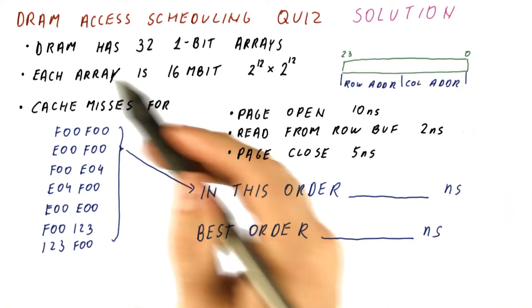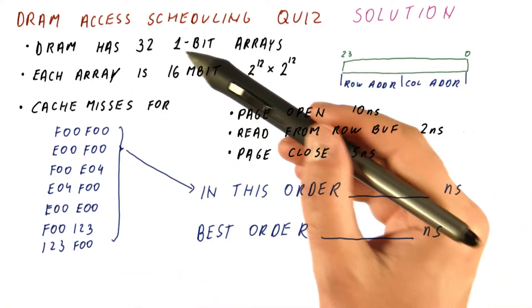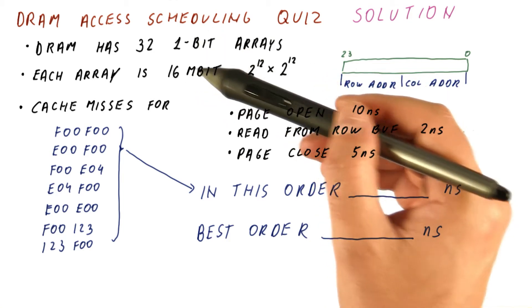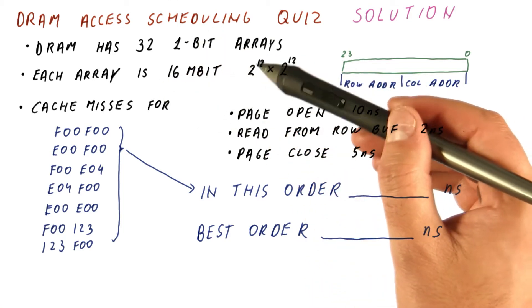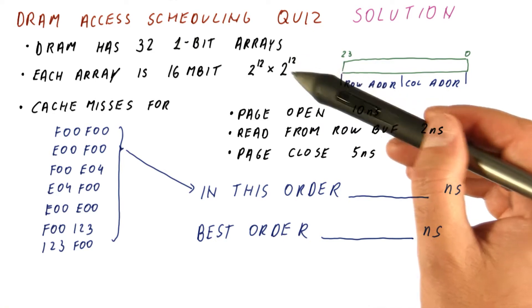Let's look at the solution to our DRAM access scheduling quiz. So we have 32 arrays, each is 16 megabits and takes a 12-bit row address and a 12-bit column address.